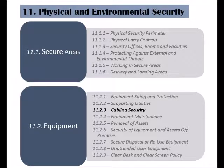The third control of the equipment category is called cabling security, mainly power and telecommunication cabling. This control is concerned with the protection of those cables from environmental and human damage, intentional or accidental.